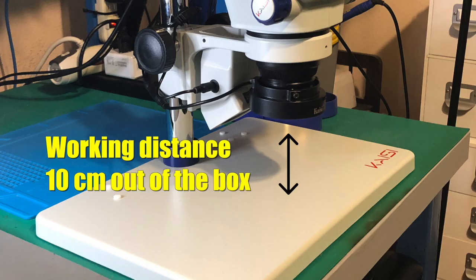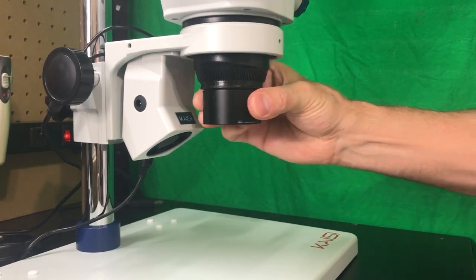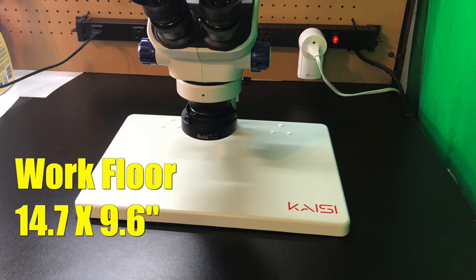It has a working distance of 10cm out of the box but is also compatible with my .5 Barlow lens, which I will be using in some parts of this video to increase that distance to 15cm. The dimensions of the work floor itself are 14.7 x 9.6 inches.